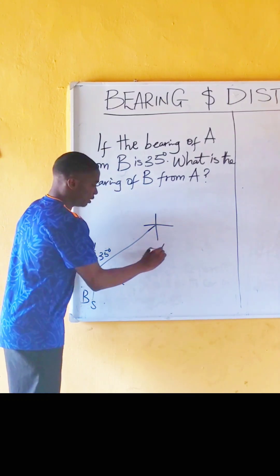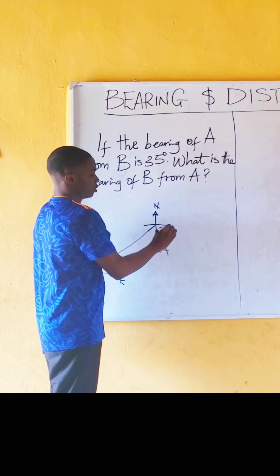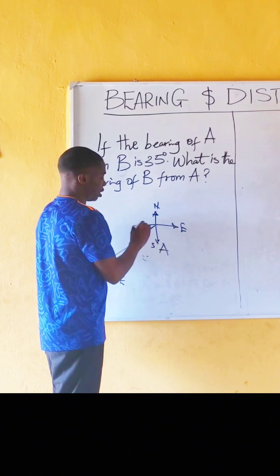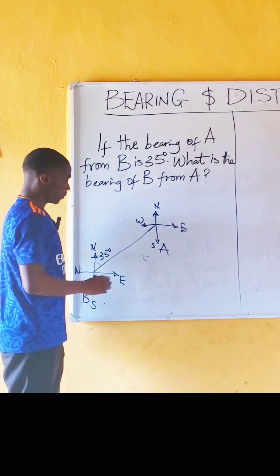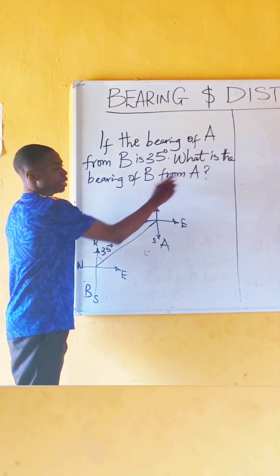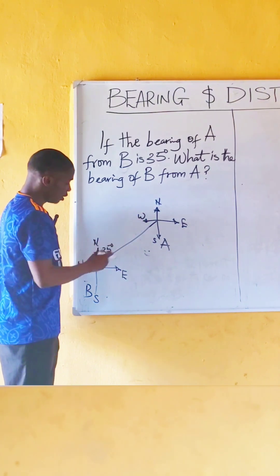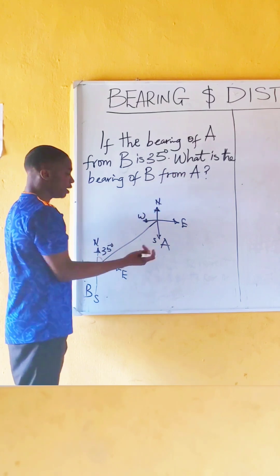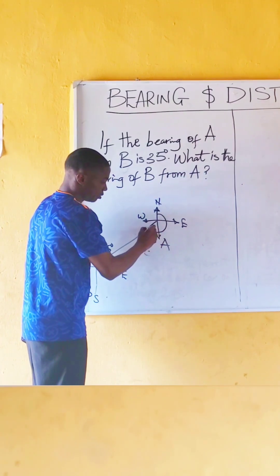Now, this is A. We have here north, east, south, and west. Now, we have to find the bearing of B from A. The bearing of A from B is 35 degrees. So the bearing of B from A is what? From here to here.